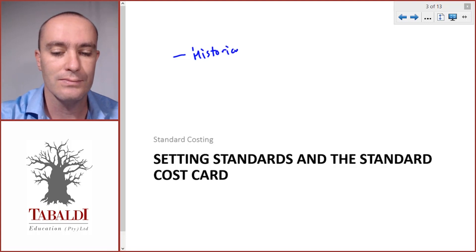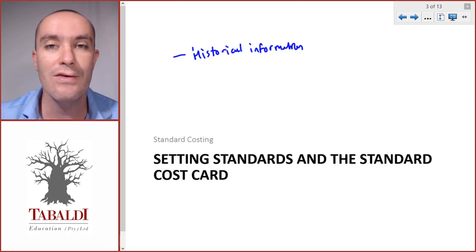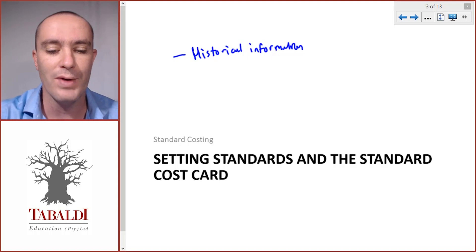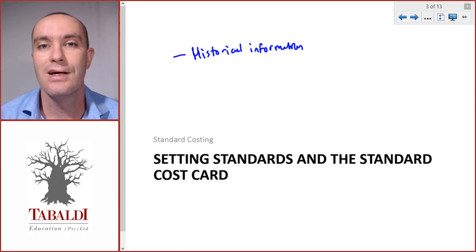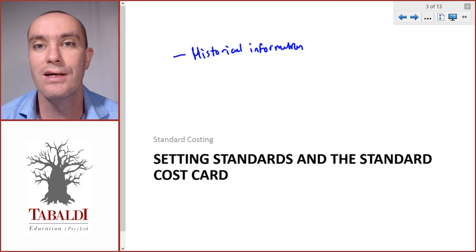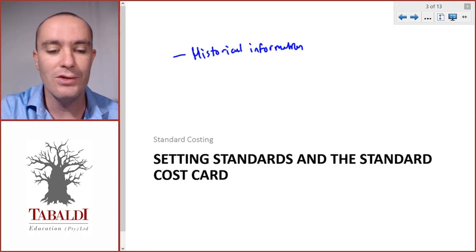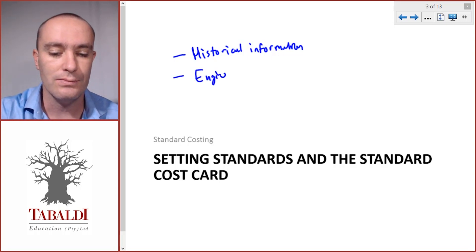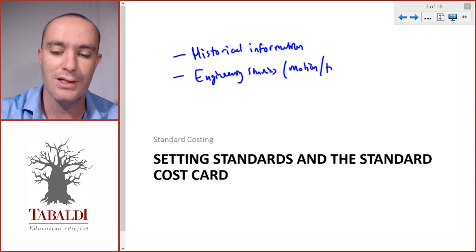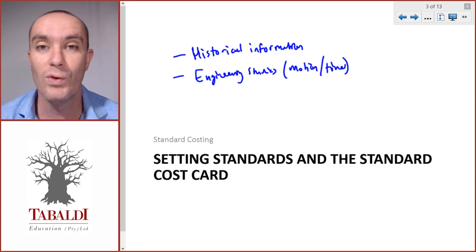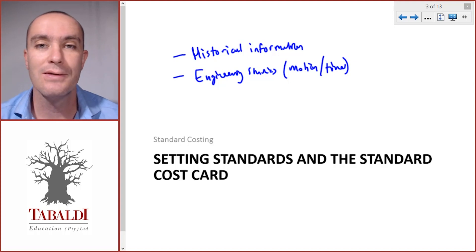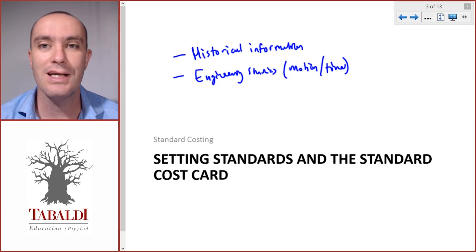But what about a company that doesn't have a series of past information, or if the past information has a lot of inefficiencies we don't want to carry over to future standard costs? Then we can use what is called engineering studies, which might consist of motion studies and time studies. Engineers might be employed or contracted to come and look at our process, run tests, and calculate what it should cost to make a product.